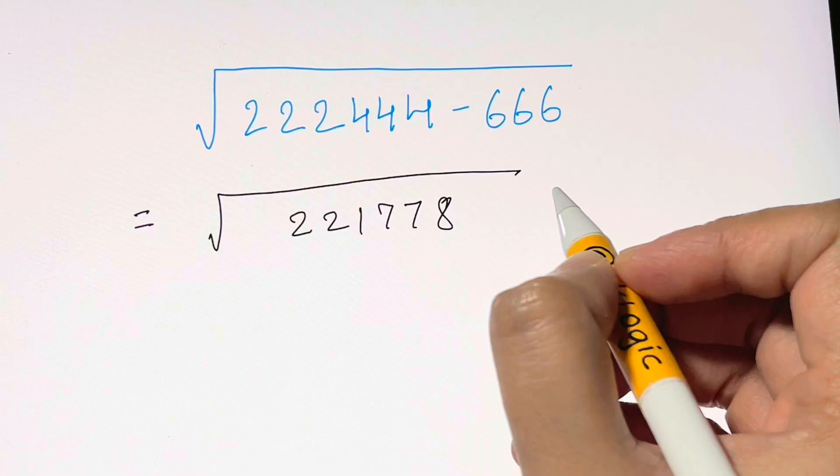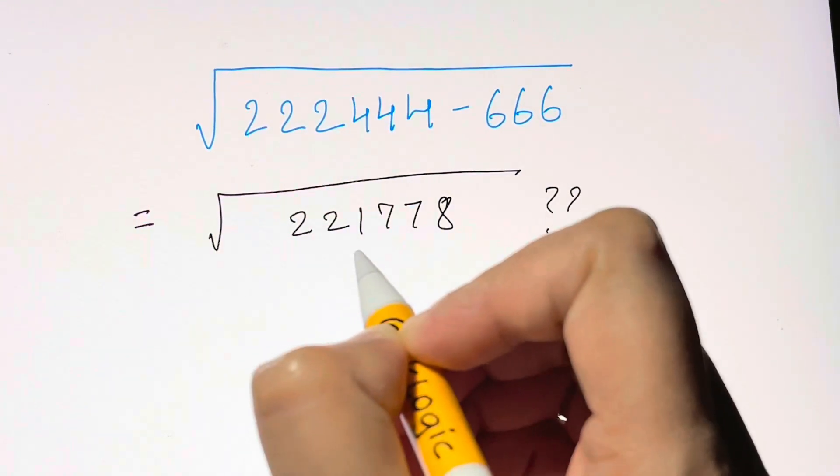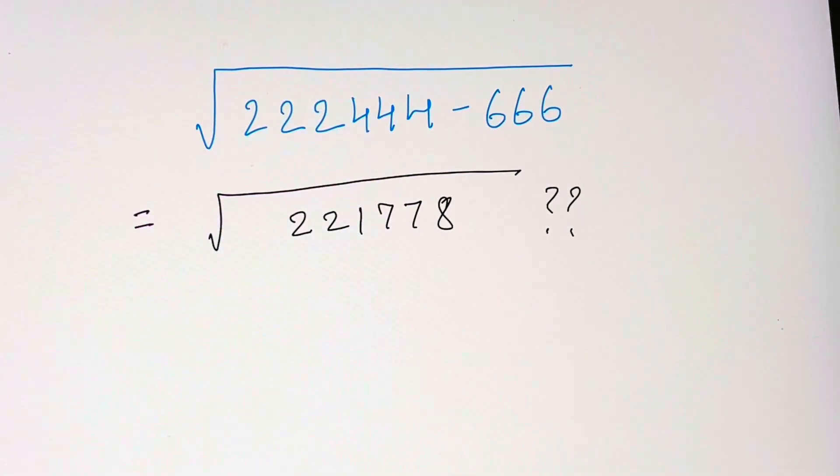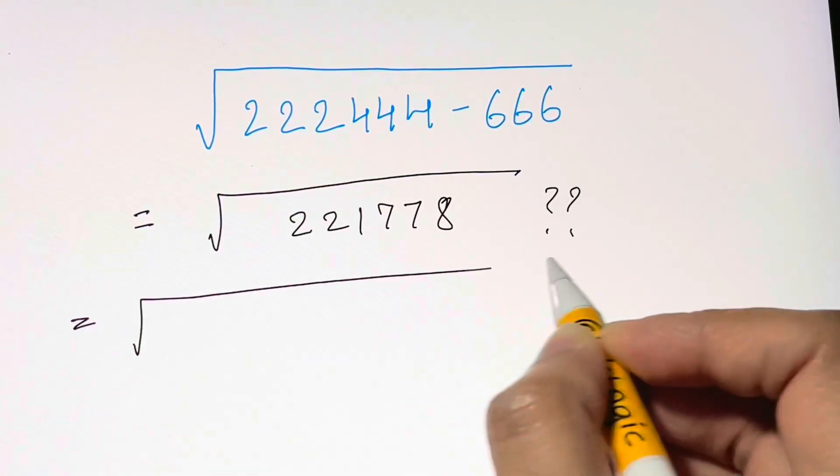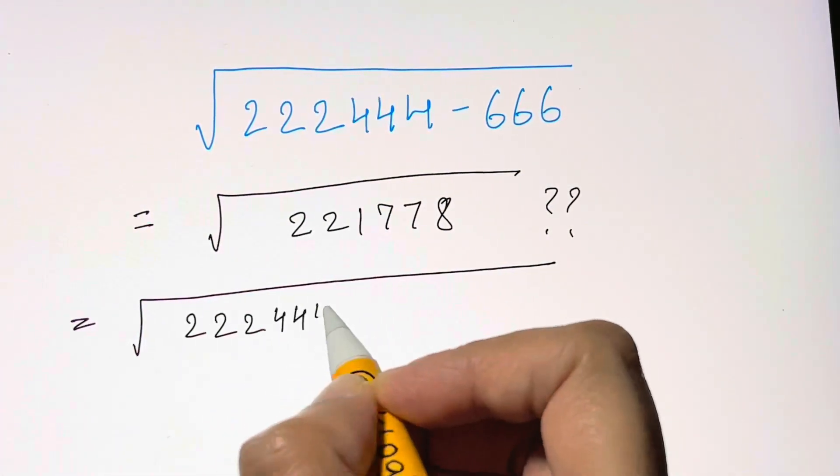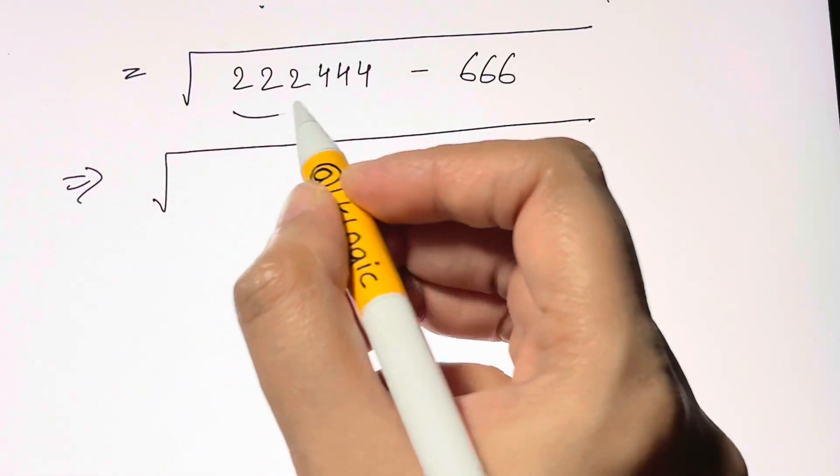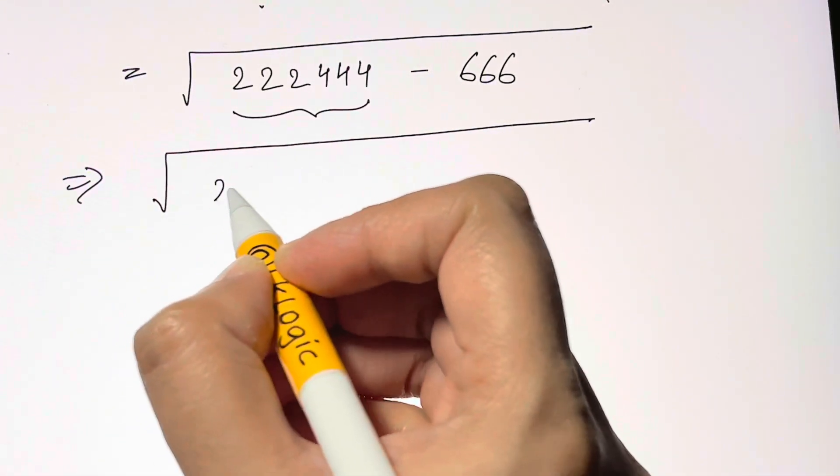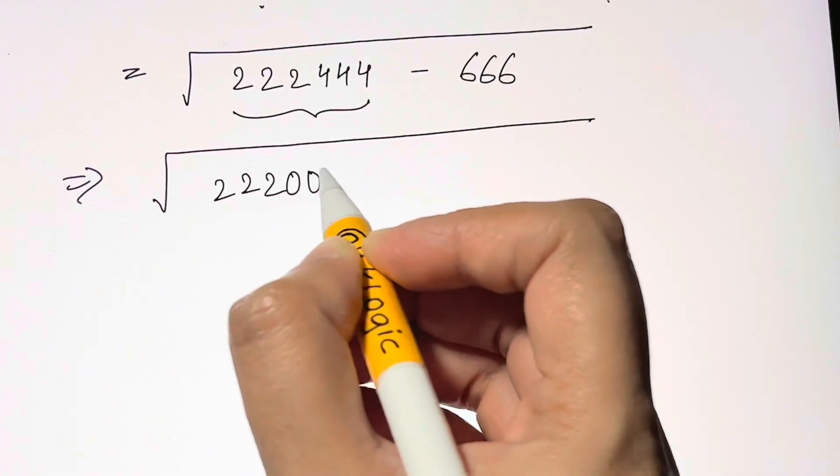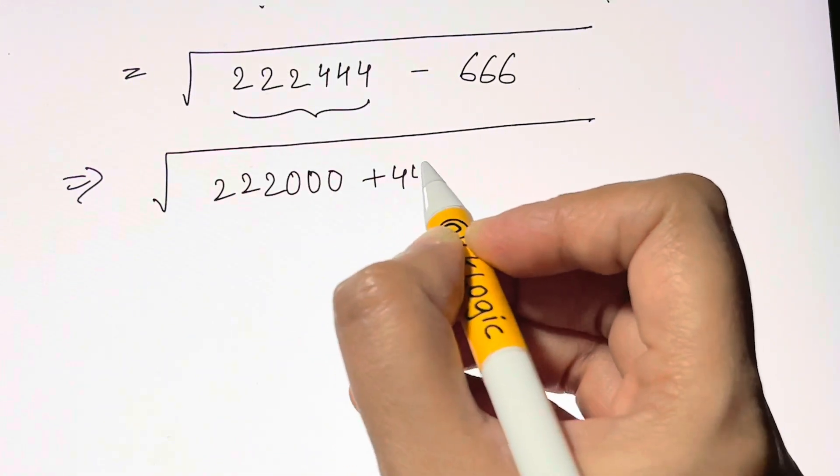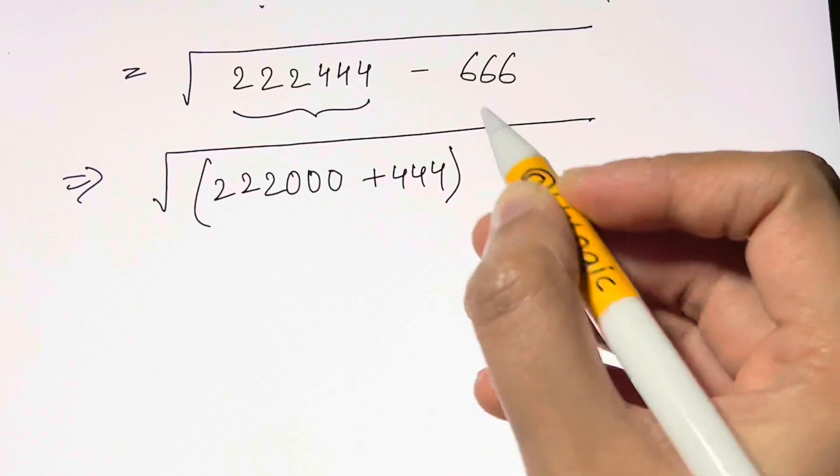What without a calculator? We have to do. So let's take, what's the question? We'll have under the root, just rewrite this number as 222000 plus 444, and then you have the same thing minus 666.